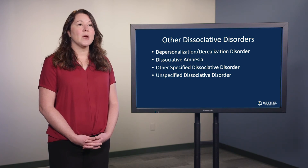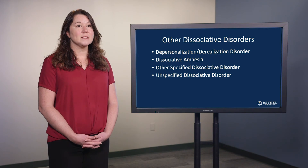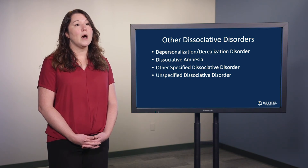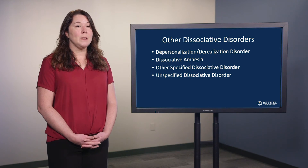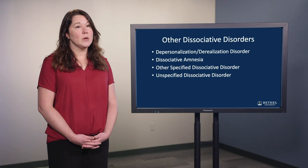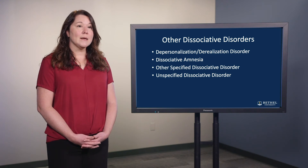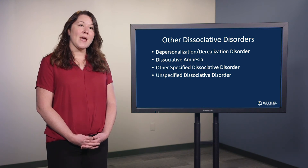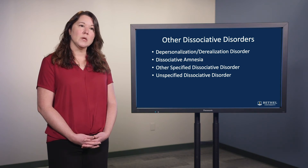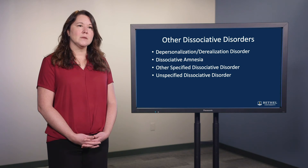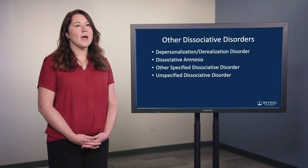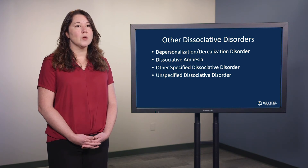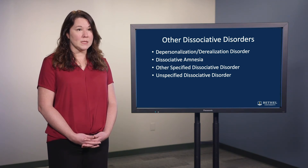The DSM-5 describes dissociative amnesia as characterized by an inability to recall autobiographical information. This amnesia may be localized, such as to a particular event or period of time; selective, such as a specific aspect of an event; or generalized, perhaps to someone's entire life history or identity details. This struggle to recall autobiographical information is not the same as normal forgetting or age-related dementia, for example.